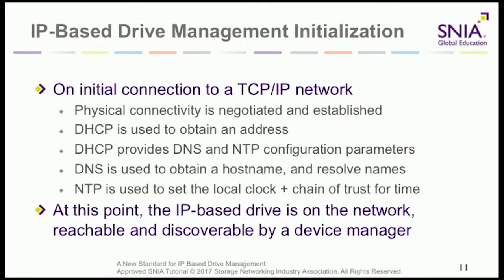Accurate time matters: you want to correlate events — if something happened at a specific time as a result of something else, accurate timestamps let you draw causal conclusions. We want to get a hostname, resolve names of other things on the network, set the clock and the chain of trust for that time. Changing the system's time is one way a malicious actor could get in and disrupt things. At this point, you're a network endpoint — reachable, discoverable, and usable by management software.